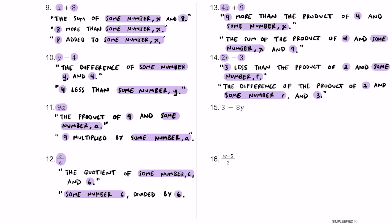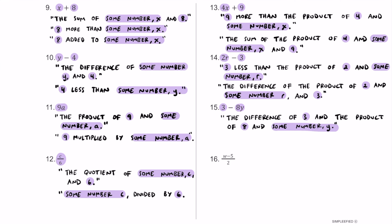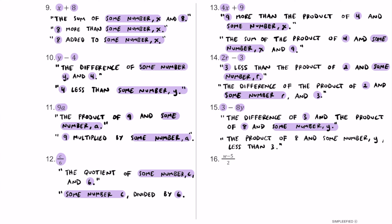For number fifteen, we have three minus 8y. Three is one piece and 8y is our second. We have two operations: subtraction and multiplication. A great verbal translation is: the difference of three and the product of eight and some number y. We're subtracting the product 8y from three. Another option: the product of eight and some number y, less than three — meaning it's being subtracted from three.